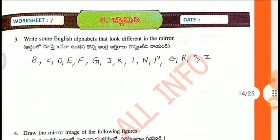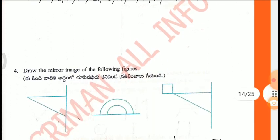Seventh one: Write some English alphabets that look different in the mirror. Answer: B, C, D, E, F, G, J, K, L, N, P, Q, R, S, Z.